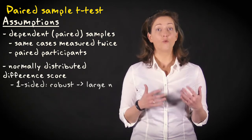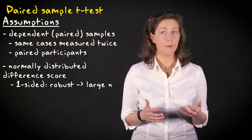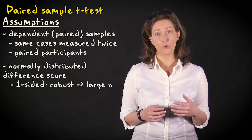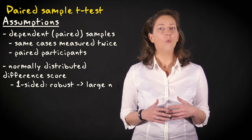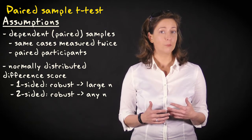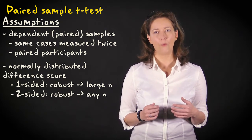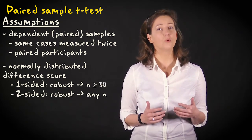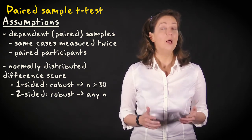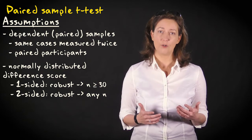The paired t-test is robust against violation of this normality assumption for large samples due to the central limit theorem. It's also robust for small samples when using a two-sided test. Normality is important only if the number of difference scores is small. In this course, we'll consider a sample of fewer than 30 pairs small, but remember these rules of thumb are somewhat arbitrary.